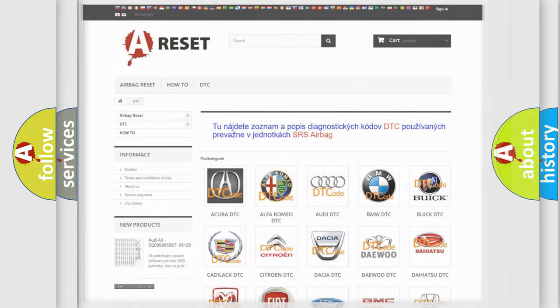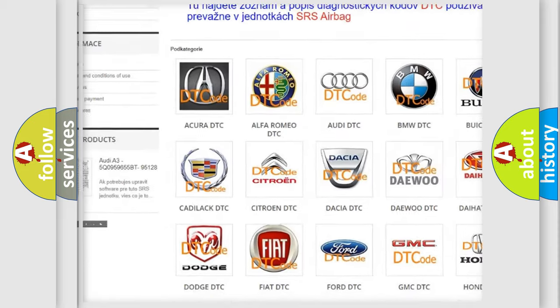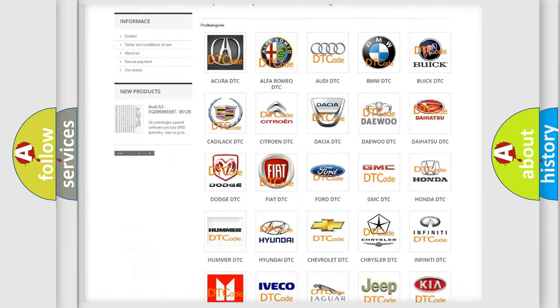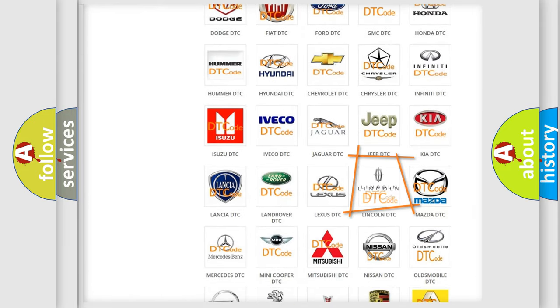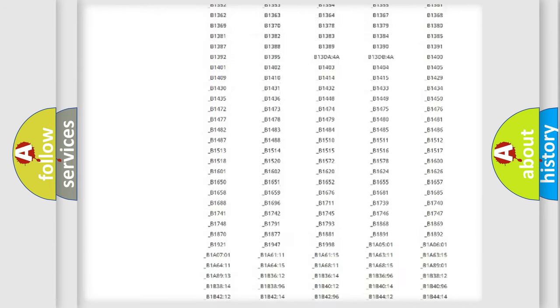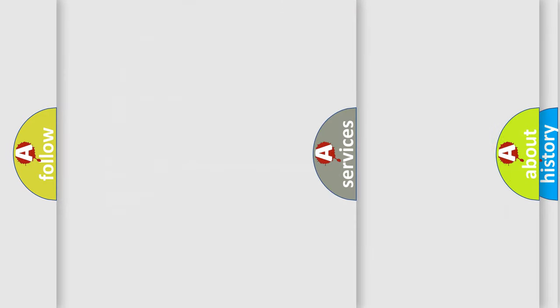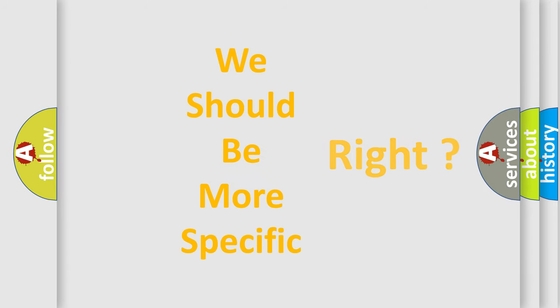Our website airbagreset.sk produces useful videos for you. You do not have to go through the OBD2 protocol anymore to know how to troubleshoot any car breakdown. You will find all the diagnostic codes that can be diagnosed in vehicles. Also many other useful things. The following demonstration will help you look into the world of software for car control units.